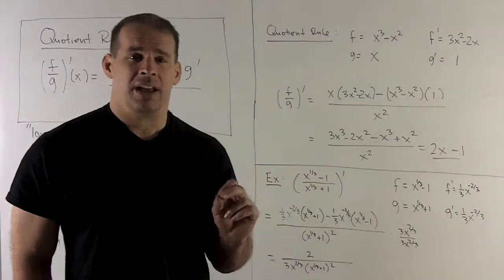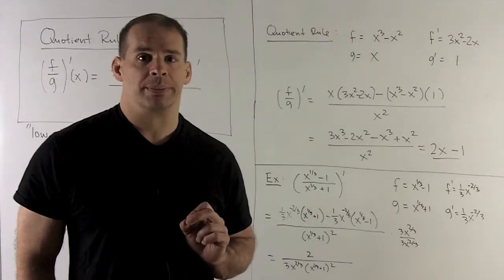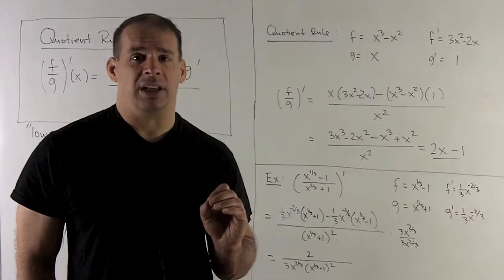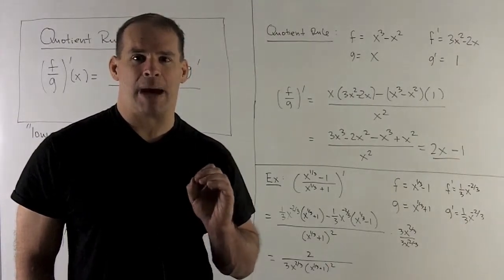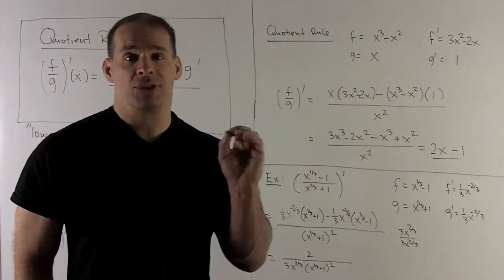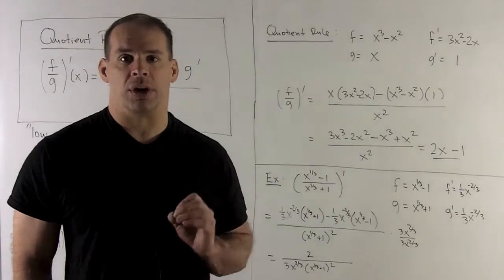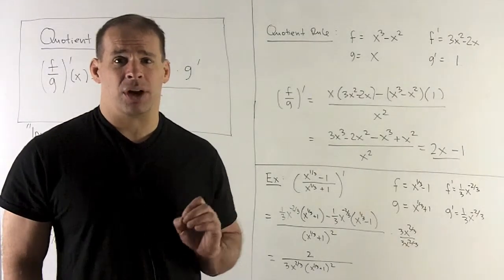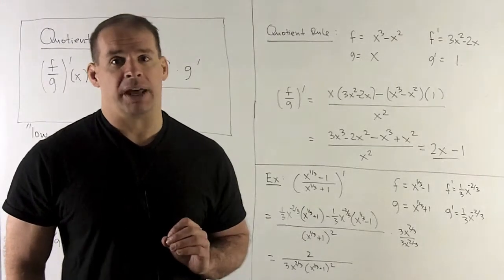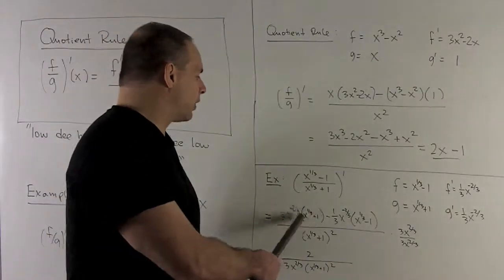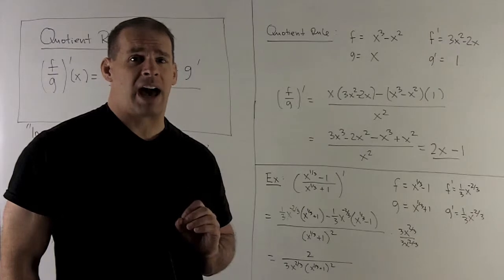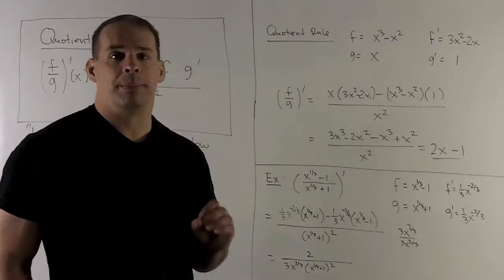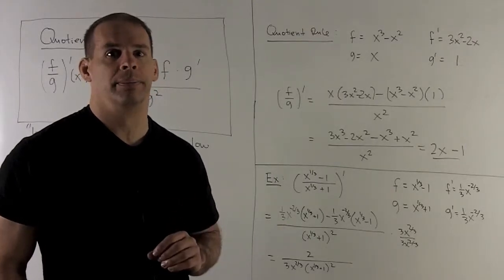The result is messy, so this is a good exercise in cleaning up exponents. Rather than multiplying through by x^(-2/3) (which makes things messier), it's better to multiply top and bottom by 3x^(2/3) to cancel the negative exponents and the fractions. When (1/3) meets 3 they cancel; when x^(2/3) meets x^(-2/3) they cancel. What remains in the numerator is just 2, giving the final answer 2 / [3x^(2/3) · (x^(1/3) + 1)²].